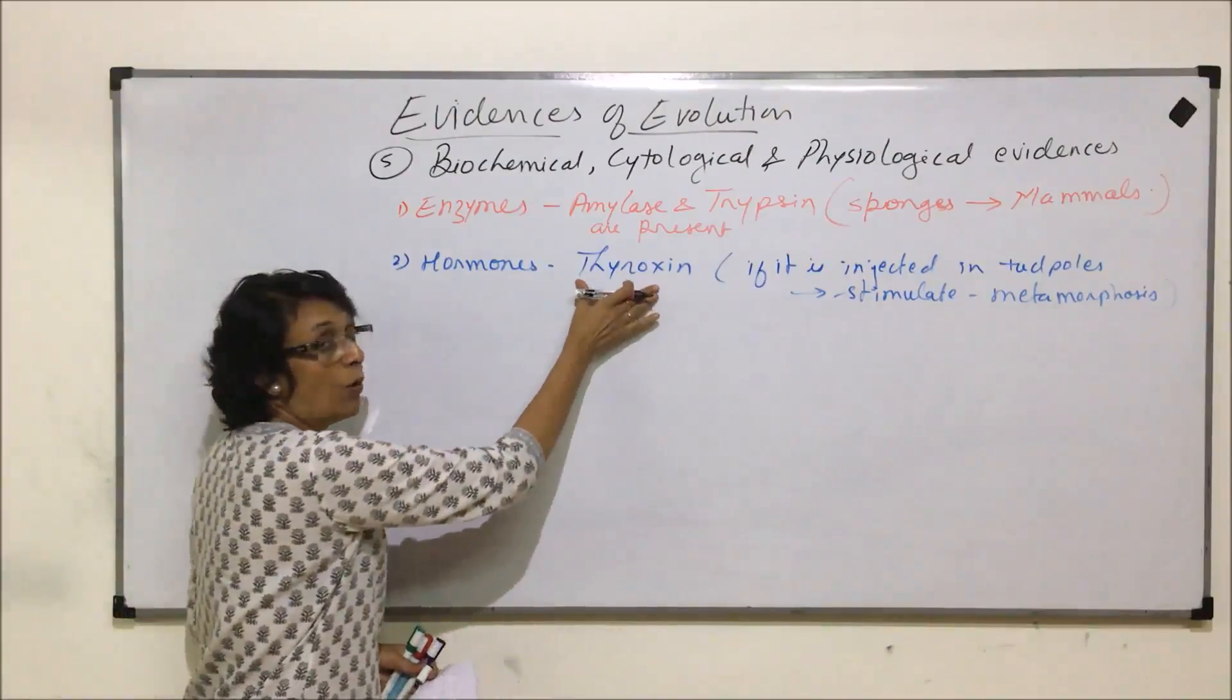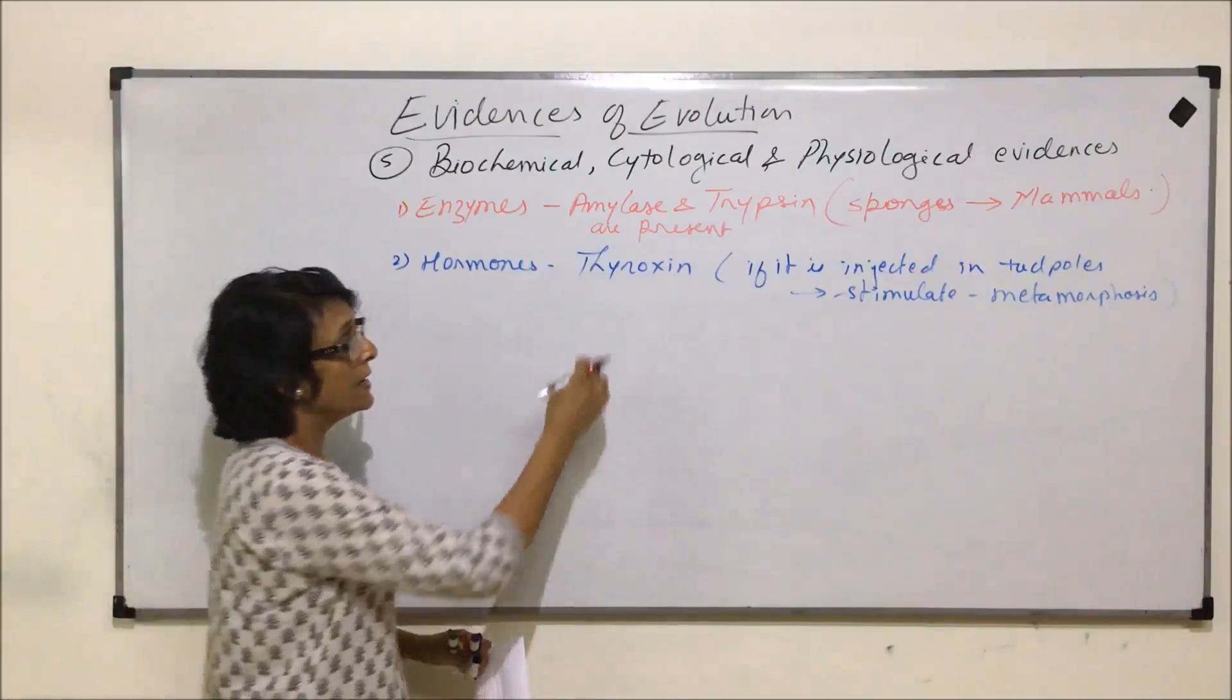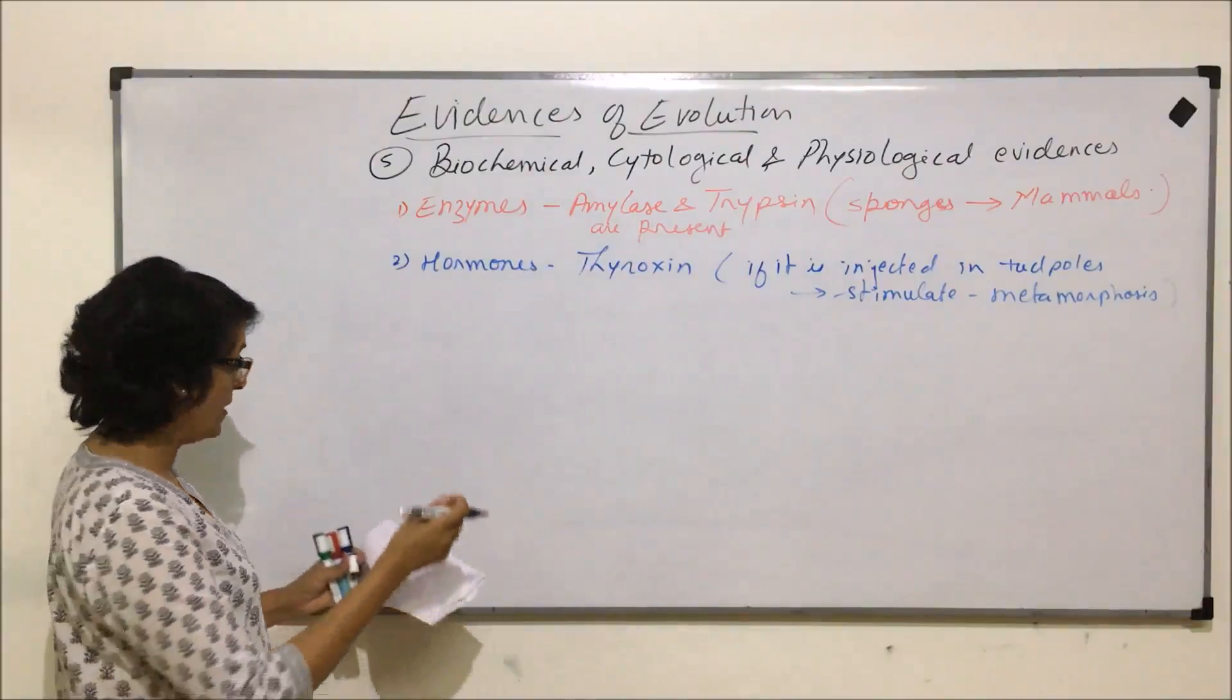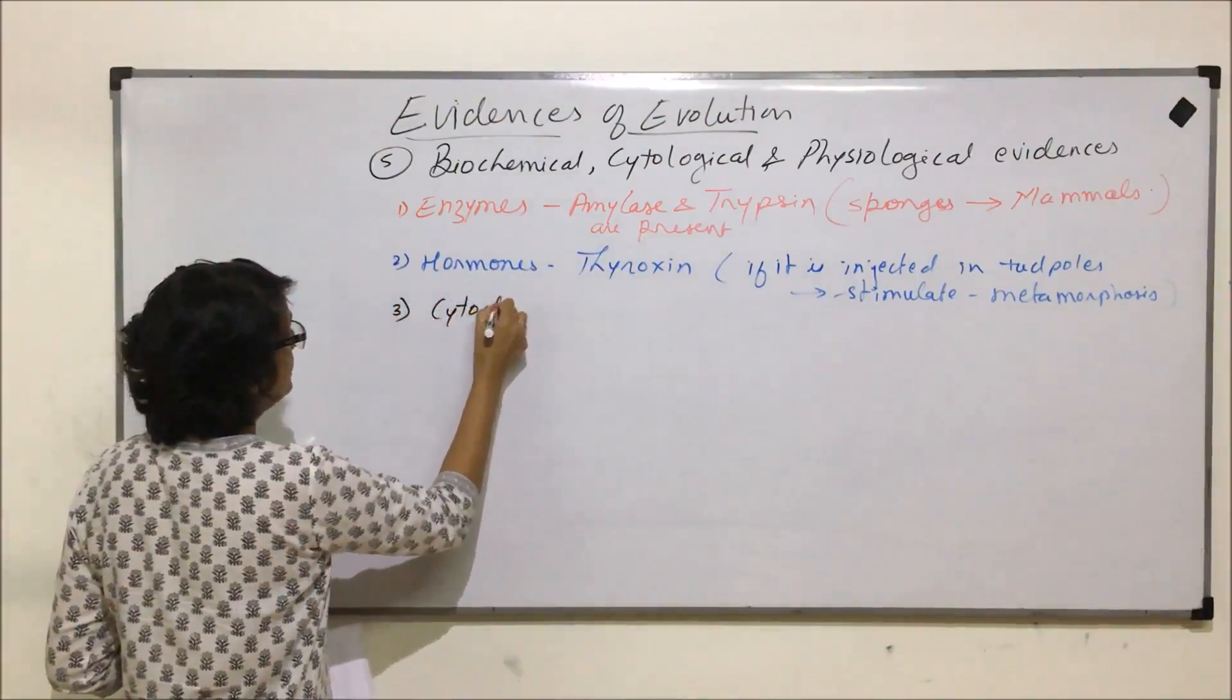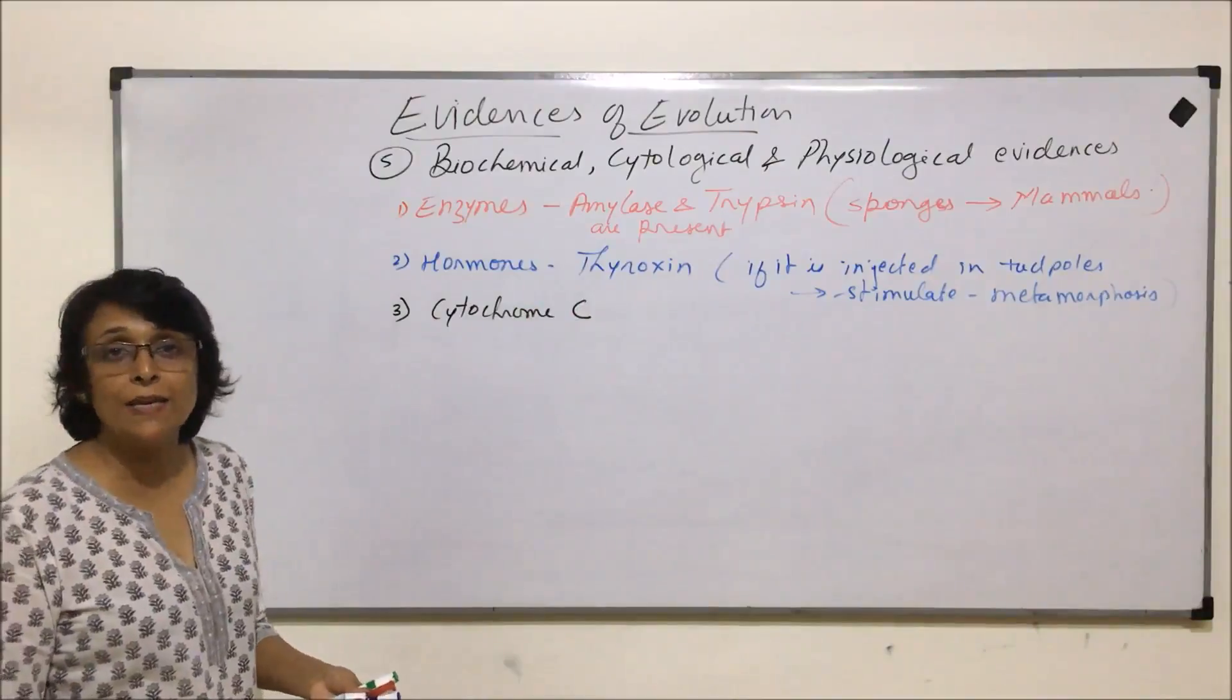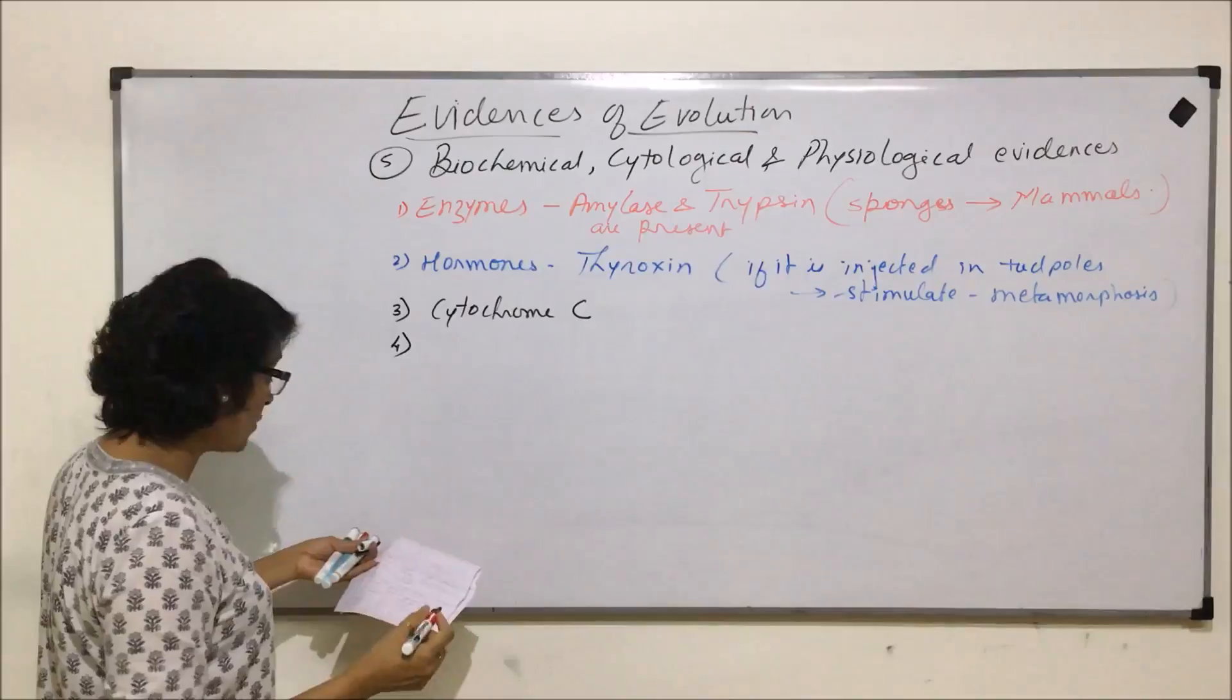That means the hormone which is working in higher organisms or in mammals is doing the same thing in lower organisms or lower vertebrates, we can say, in case of amphibians. The next is cytochrome C, which is also found in most of the organisms and it helps in electron transport chain.